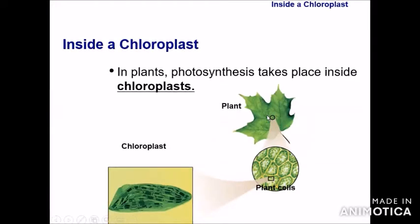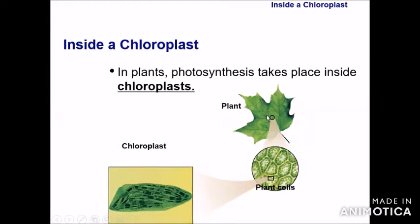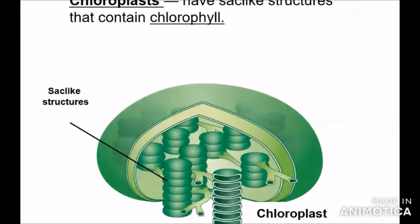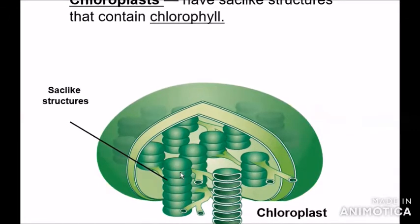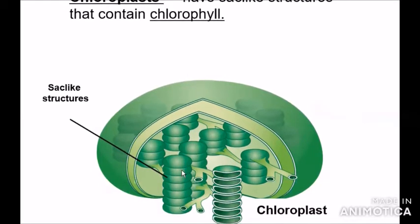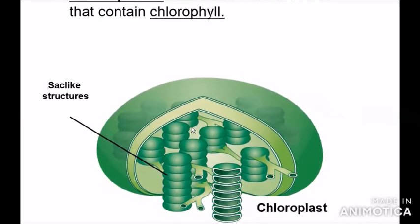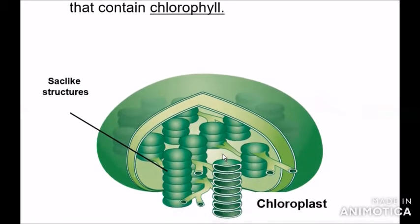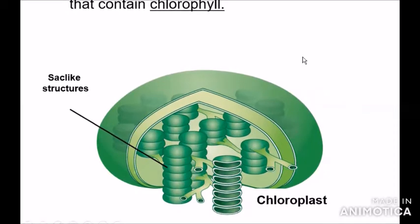In plants, photosynthesis takes place inside chloroplasts, and chloroplasts are located in both the spongy mesophyll and palisade mesophyll layers of the leaf. Chloroplasts contain cyclic structures called grana, which are composed of thylakoid membrane. The space between the thylakoid membranes is called the stroma, and this is the outer membrane of the chloroplast.